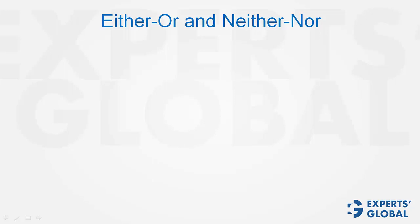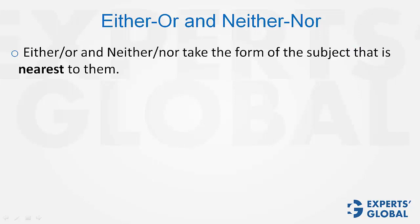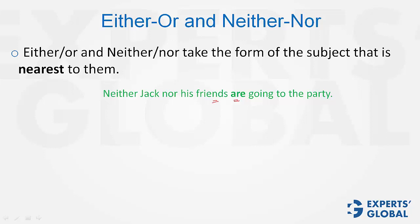Either/or and neither/nor take the form of the subject that is nearest to them. For example, 'Neither Jack nor his friends are going to the party,' because the verb 'are' has a plural noun, 'friends,' closest to it.